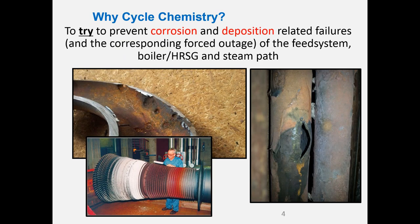So, why cycle chemistry? This is the chemistry of water and steam in any kind of boiler. What we're trying to do is prevent corrosion and deposition related failures, which invariably end up with what we call a forced outage — where the plant is shut down and unable to produce steam or electricity. You want your plant to operate as and when required, without any unplanned forced outages. You want to plan your outage around your process.